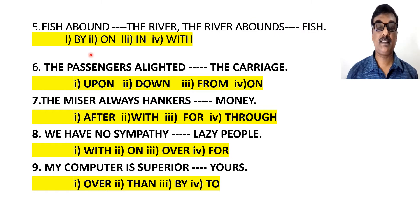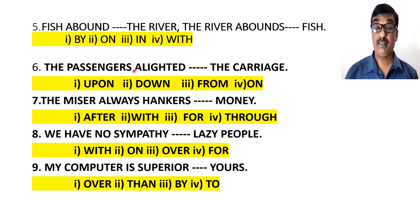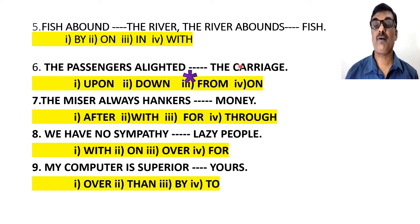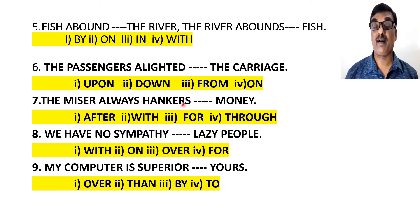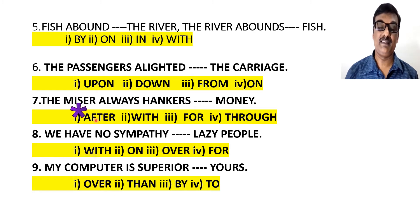Next: 'The passengers alighted [blank] the carriage.' 'Alighted' means to come down from some place, so the passengers alighted 'from' the carriage — 'on,' 'down,' or 'upon' are not correct. Next: 'The miser always hankers [blank] wealth.' The word 'hanker' always agrees with 'after,' so it is 'hanker after.'